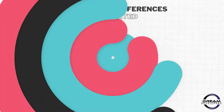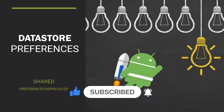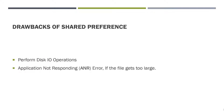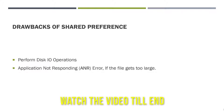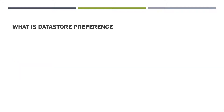Now if you don't know what shared preference is, we have already created that tutorial — the link is given in the description box. First, let's see what are the drawbacks of shared preference. Shared preference performs disk I/O operations, so sometimes we get the error that the app is not responding because the shared preference file gets too large. Also, in shared preference there is no mechanism for signaling errors.